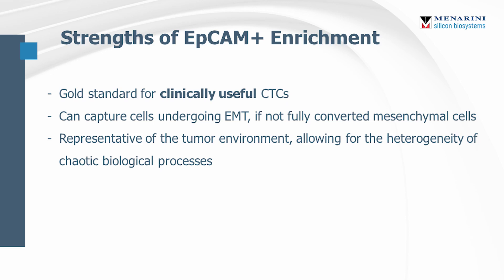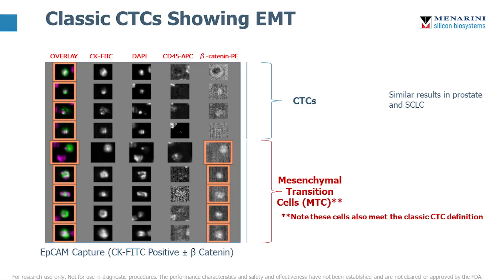EpCAM positive enrichment does have a number of strengths. It is the gold standard for clinically useful CTCs. It can capture cells undergoing EMT if they're not fully converted to mesenchymal cells, and it is representative of the tumor environment, allowing for the heterogeneity of chaotic biological processes with a number of intermediary cell types. Here I want to show a diagram of CellSearch cells that meet the classical definition but also express beta-catenin in the fourth channel — cells that are undergoing the mesenchymal transition — demonstrating that we can capture EpCAM low cells, or arguably EpCAM cells that are undergoing EMT.